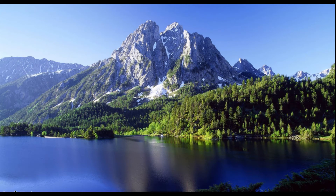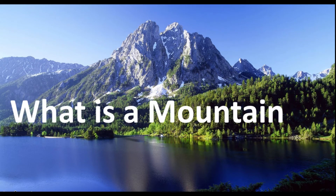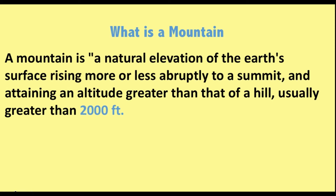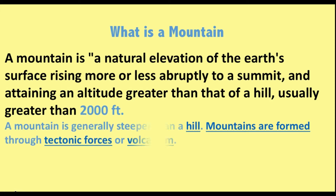Welcome everyone. Today we want to look at mountains — what is a mountain? Geographically, a mountain is a natural elevation of the earth's surface rising more or less abruptly to a summit and attaining an altitude greater than that of a hill, usually greater than 2000 feet above sea level. A mountain is generally steeper than a hill. Mountains are formed through tectonic forces and volcanism.